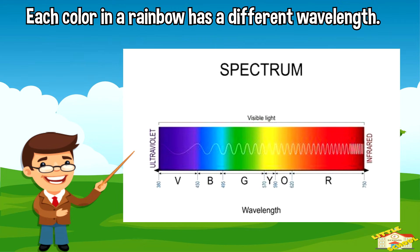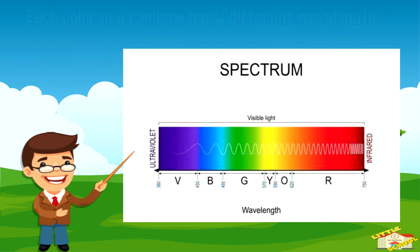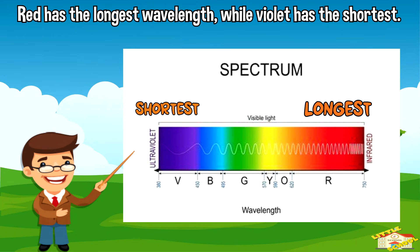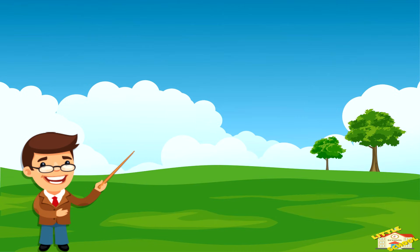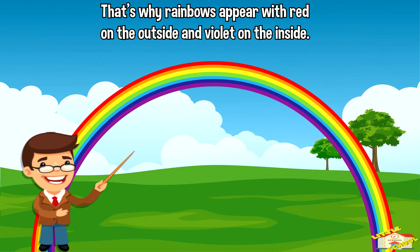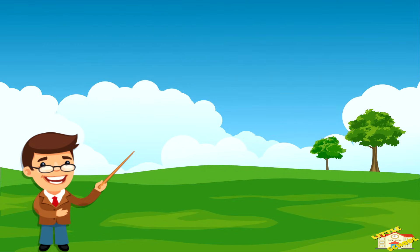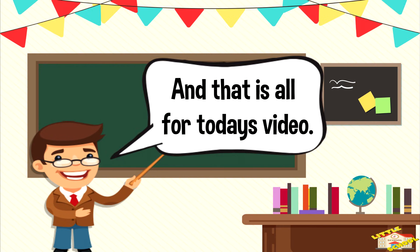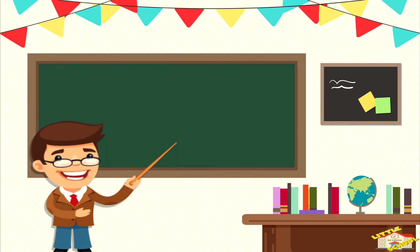Each color in a rainbow has a different wavelength. Red has the longest wavelength while violet has the shortest. That's why rainbows appear with red on the outside and violet on the inside.